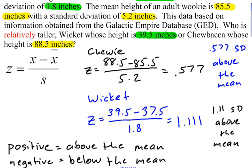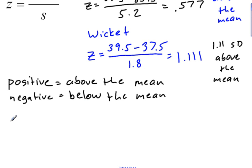So, if I have a z-score that is positive 2.5, that means that I am 2.5 standard deviations above the mean.